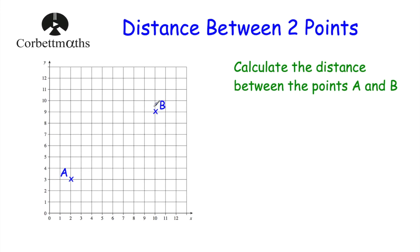So if we've got these two points, A and B — point A has got coordinates (2, 3) and the point B has got coordinates (10, 9) — and we want to work out the distance between the points A and B, my first step would be to join them up like so.